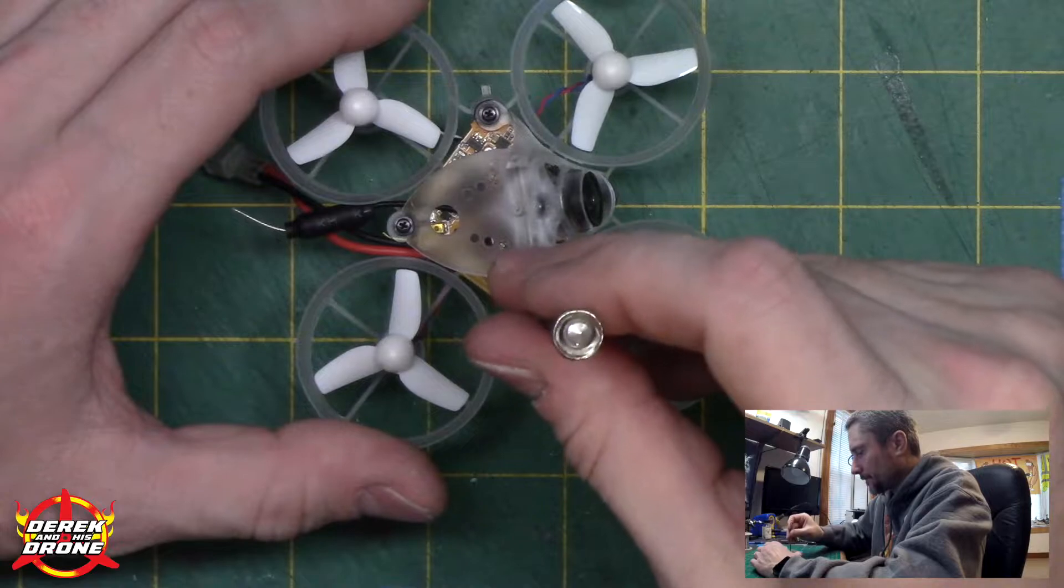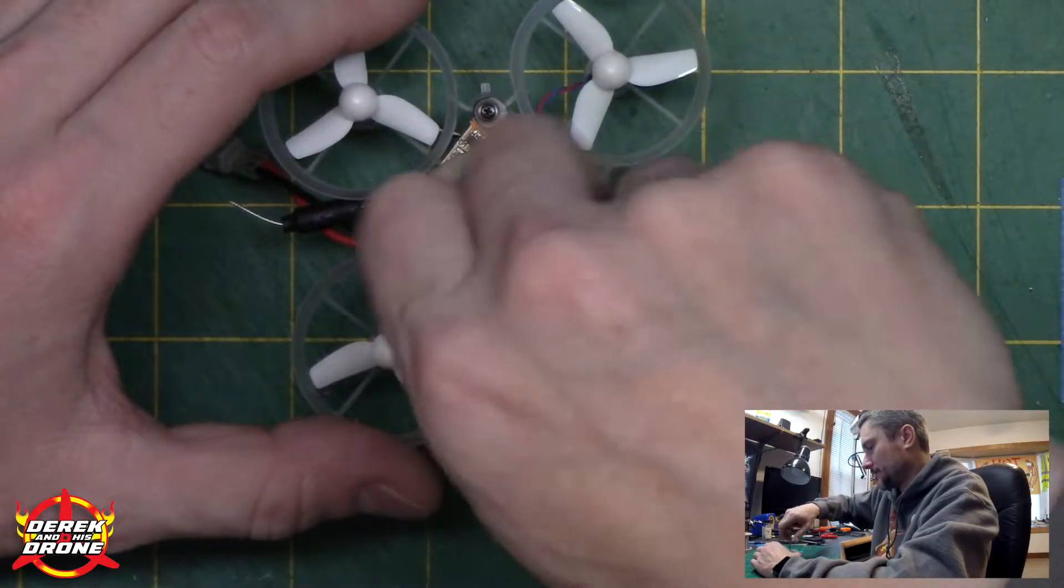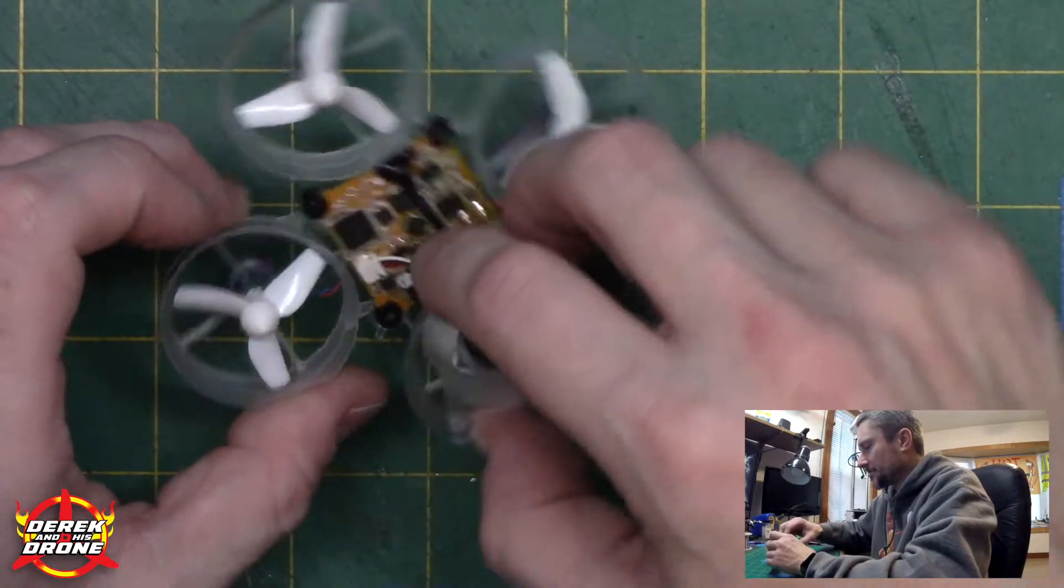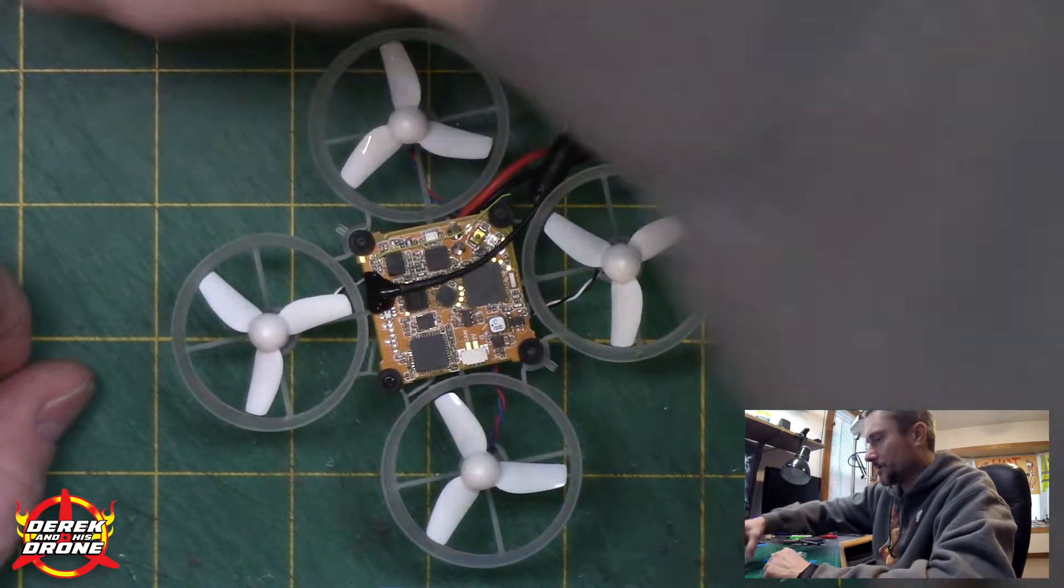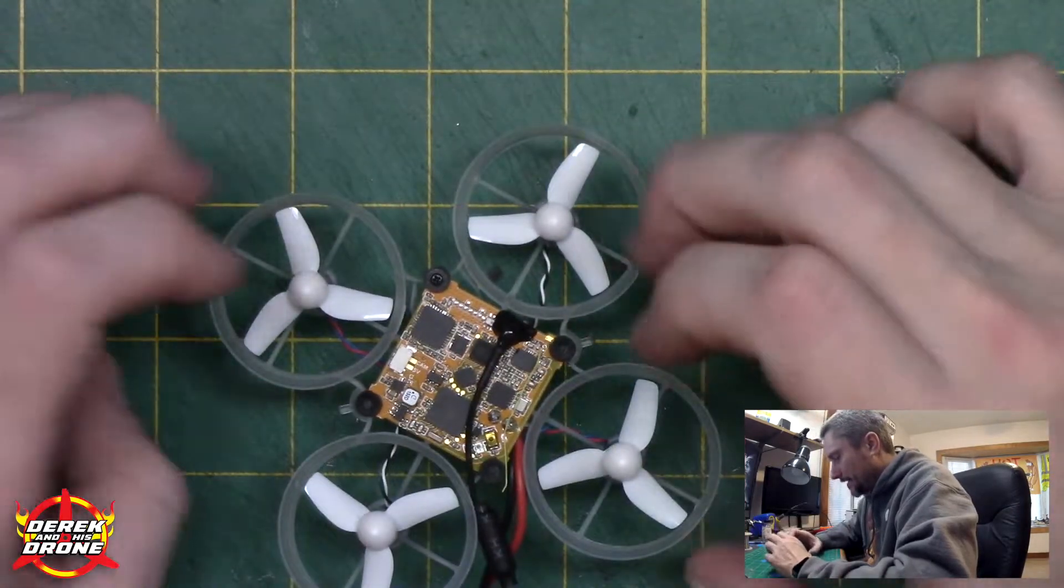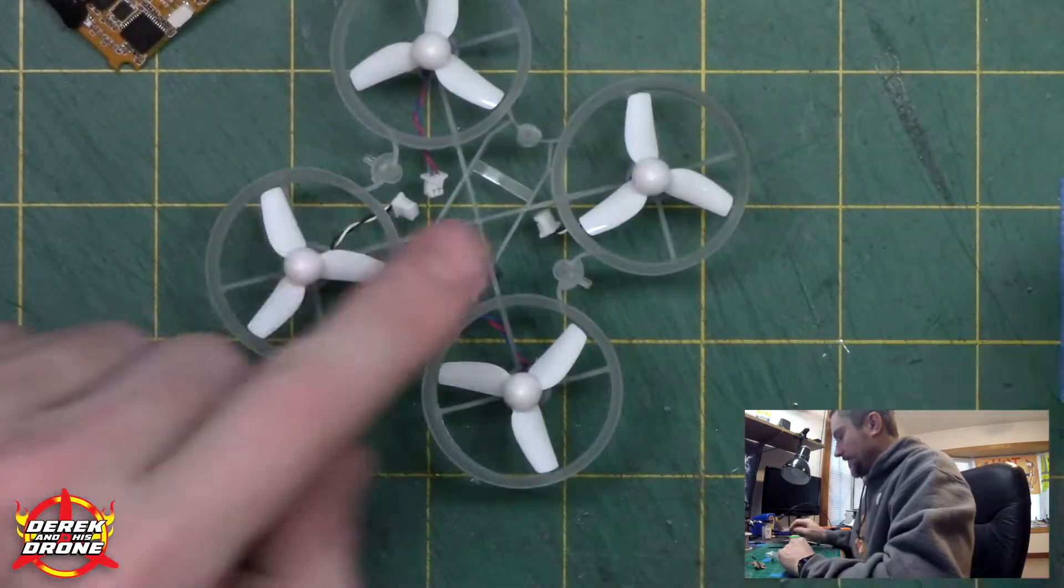Now with the jeweler's screwdriver, we're going to remove the canopy and disconnect your camera. Canopy is removed. Let's pop the flight controller out. Our flight controller is out and here's our frame.